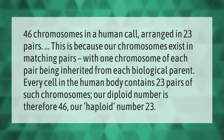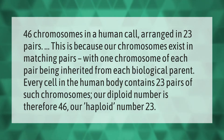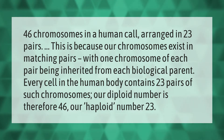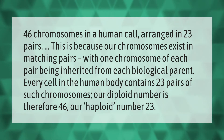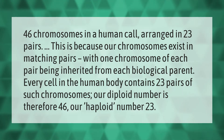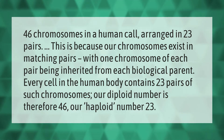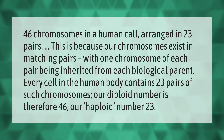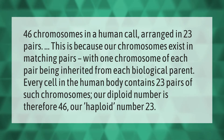There are 46 chromosomes in a human cell, arranged in 23 pairs. This is because our chromosomes exist in matching pairs, with one chromosome of each pair being inherited from each biological parent. Every cell in the human body contains 23 pairs of such chromosomes. Our diploid number is therefore 46; our haploid number is 23.